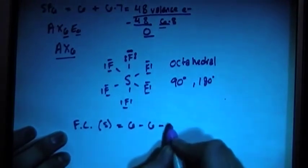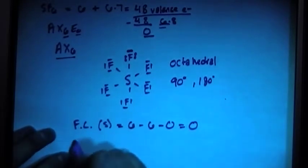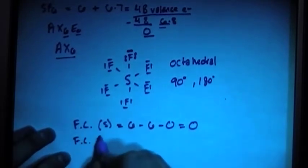Minus the number of unpaired electrons, or 0 of those. So the formal charge on the sulfur is 0. And now let's check the formal charge on the fluorine.